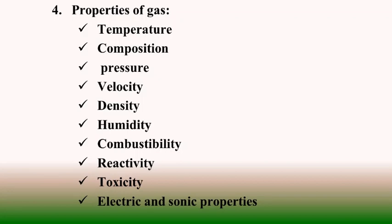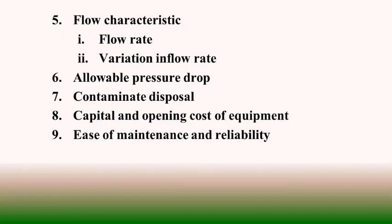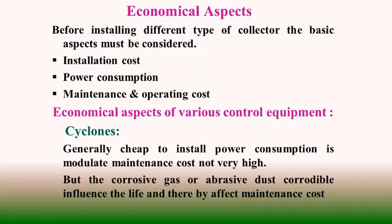Further considerations include flow characteristics in terms of flow rate and variation of inflow rate — for boilers, depending on how combustion is controlled and what volume of combustion products is generated. Then allowable pressure drop across the collection chamber, contaminate disposal arrangements with special precautions, capital and operating cost of equipment, and ease of maintenance and reliability. The economical aspect must be considered before going for any dust separation and arresting collection device.